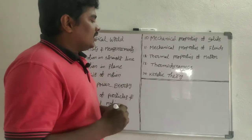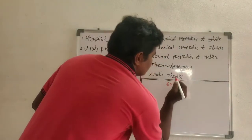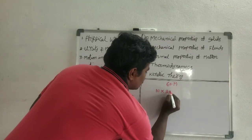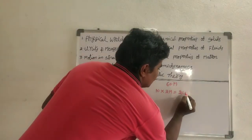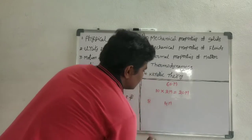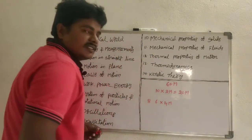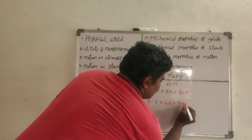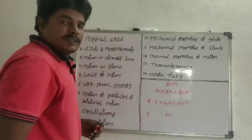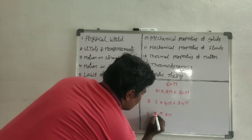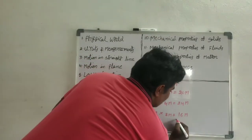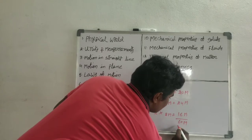The physics exam will be conducted for 60 marks. Out of those 60 marks, you get 10 two-mark questions — 10 times 2 is 20 marks. You get 8 four-mark questions and you have to answer any 6 — 6 times 4 is 24 marks. You get 3 eight-mark questions and you have to answer any 2 — 2 times 8 is 16 marks. Total: 60 marks.